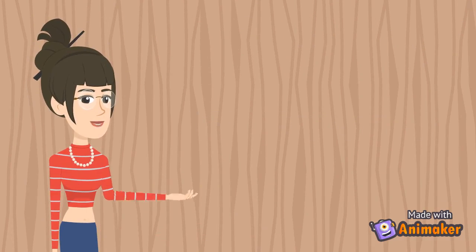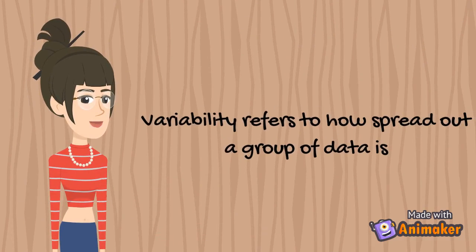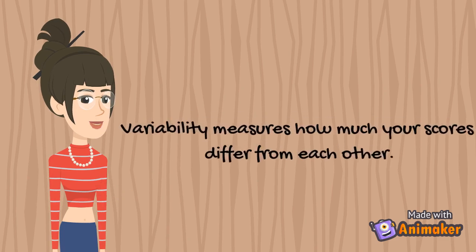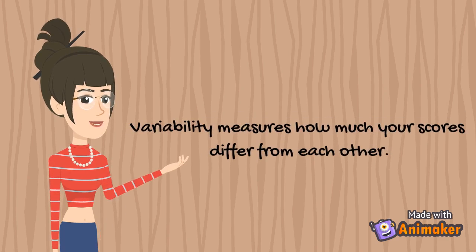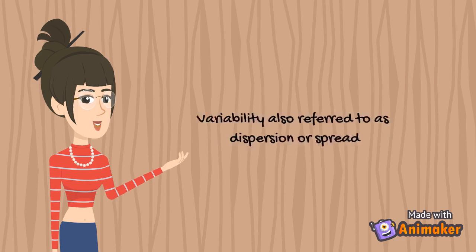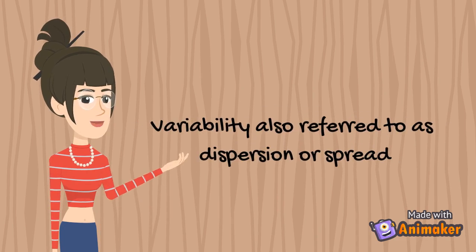You want to know if the students' scores are similar to each other or if the scores are spread out. This is called variability. Variability refers to how spread out a group of data is. In other words, variability measures how much your scores differ from each other. Variability is also referred to as dispersion or spread.